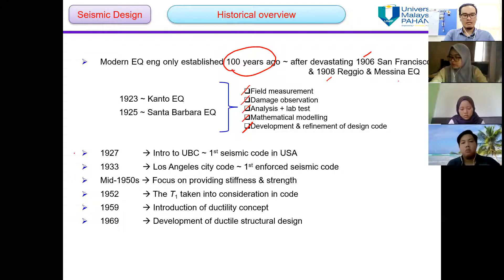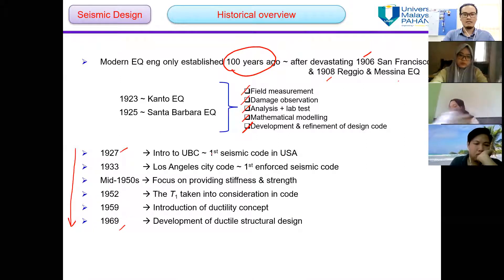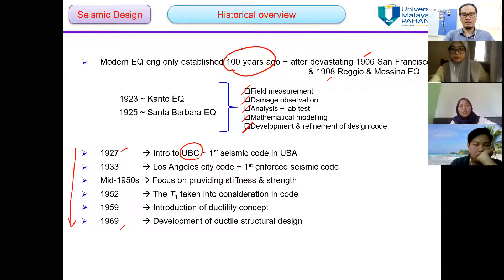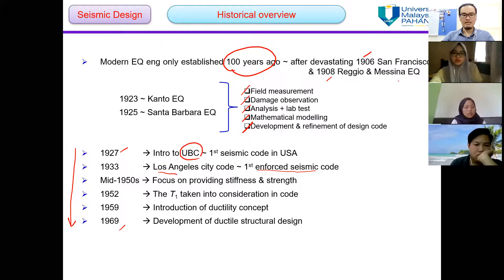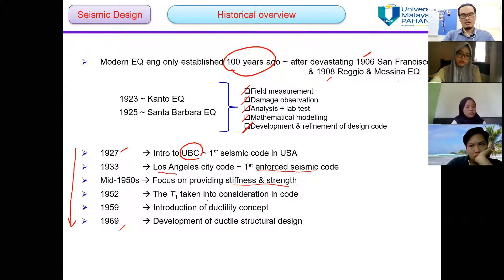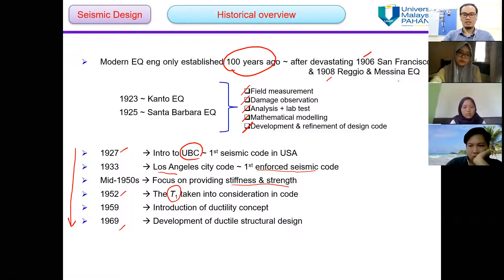This is the timeline of history from 1927 up to 1969, where the first seismic code in the USA started, known as the UBC, and then the first formal seismic code in Los Angeles City. During the mid-1950s, engineers focused on providing stiffness and strength, before the fundamental period of vibration T1 was introduced into the code in 1952. By 1959, the concept of ductility was introduced, and the development of ductile structural design had begun by 1969.